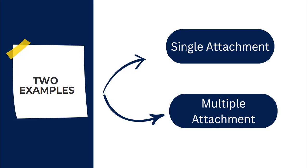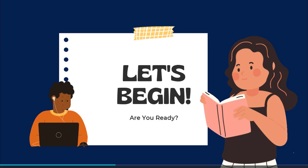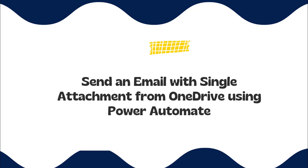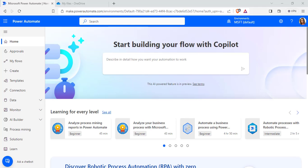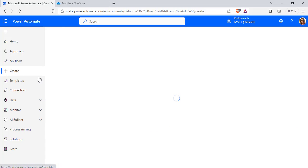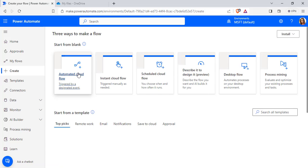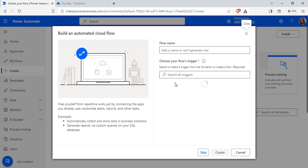First, we will see how to send an email from OneDrive with a single attachment. Secondly, we will see how to send an email from OneDrive with multiple attachments using Power Automate Flow. Let's begin with sending an email with a single attachment. Login to Power Automate using Microsoft Credentials, click on the Create option, and choose Automated Cloud Flow. The flow will trigger when a new file is created in OneDrive.